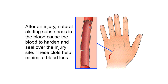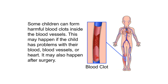Benefits of warfarin. After an injury, natural clotting substances in the blood cause the blood to harden and seal over the injury site. These clots help minimize blood loss. Some children can form harmful blood clots inside the blood vessels. This may happen if the child has problems with their blood, blood vessels, or heart, or it may also happen after surgery.